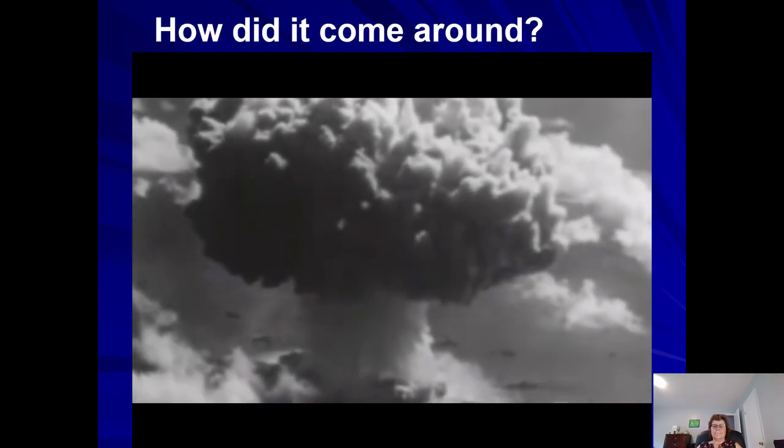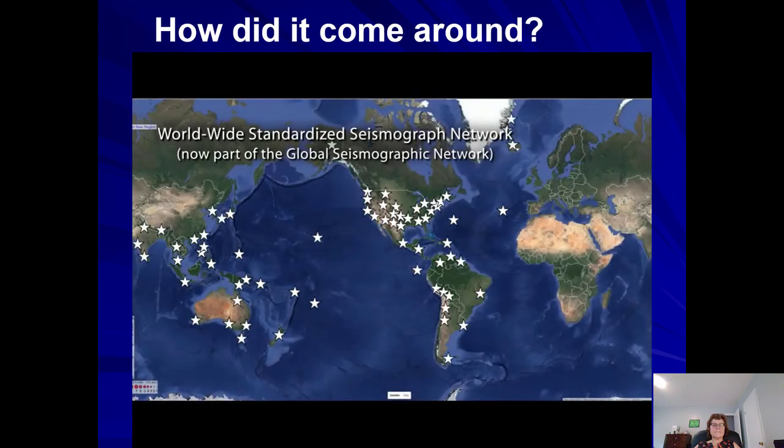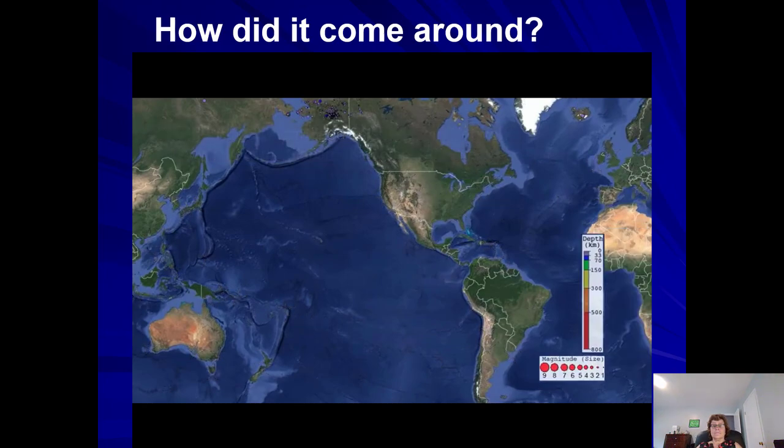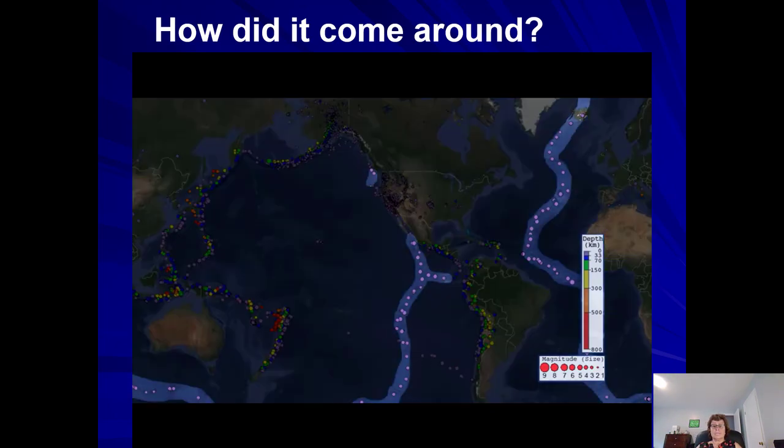Nuclear bomb testing in the 1950s motivated the establishment of a worldwide standardized seismograph network to monitor explosions, prompting a greater concentration of seismograph stations. The increased data allowed seismologists to precisely locate far more earthquakes, revealing that most occur in discrete areas, near trenches, and along mid-ocean ridges.